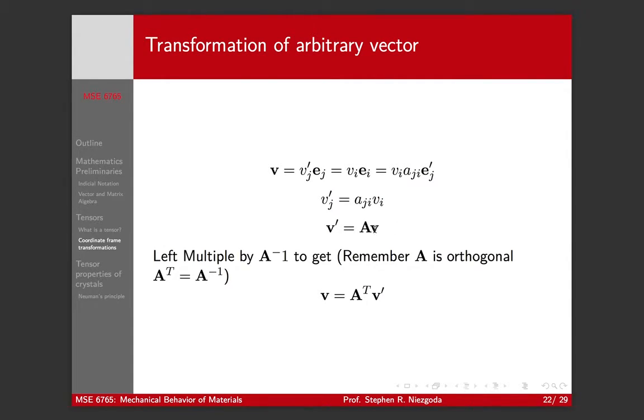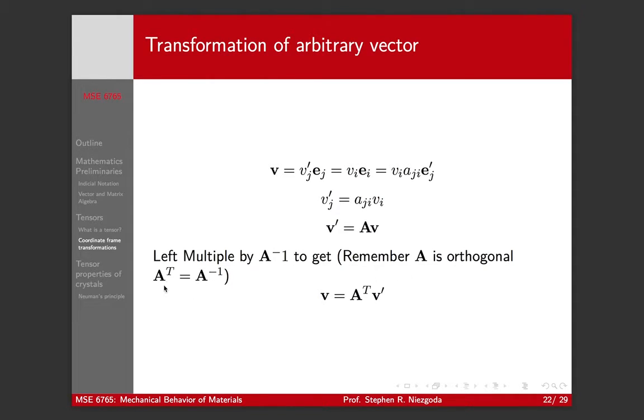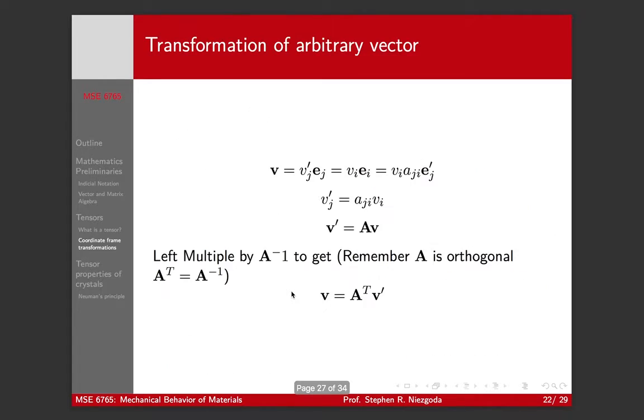It's a matrix vector product a_ji v_i. The inverse: A is by definition going to be an orthogonal matrix, so that means the transpose of it is going to be its inverse. It's an orthogonal matrix because all the columns are orthogonal to each other and all the rows are orthogonal to each other. So the inverse transform, instead of v prime equals A v, the inverse transform v is going to be A transpose v prime. The old is A transpose times the new.